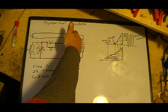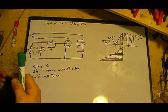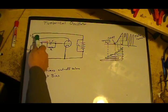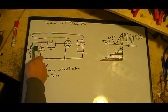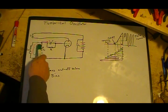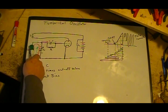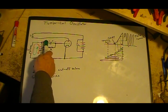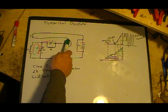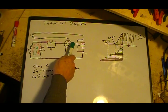So then the field starts collapsing. As it collapses, it actually strengthens this reverse flow. Since they're wound in such a way, as that strengthens, that strengthens this flow through here, making the grid more and more negative.